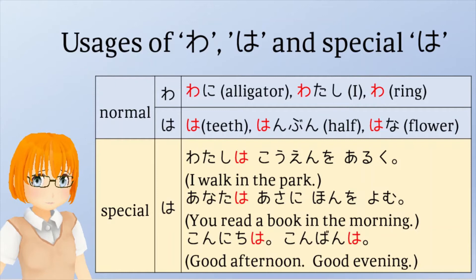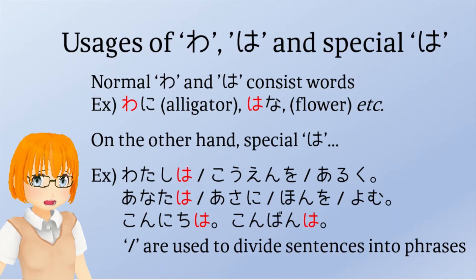How about the case of the letters わ, は, and special は? This example resembles the relation between the previously explained o letters. Part of some words are composed of normal わ and は. The use of special は is only in sentences. As shown in the previous page, normal わ and は are seen in words, and part of some words are composed of these letters. Readings of these words are ワニ meaning alligator and 花 meaning flower, respectively.